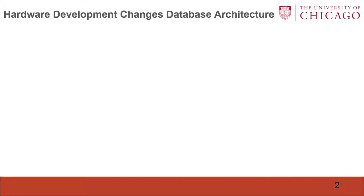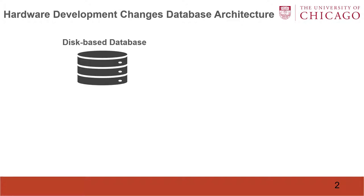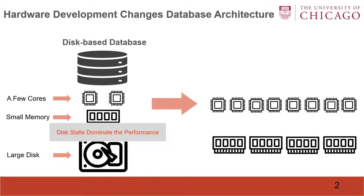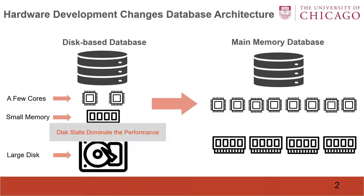Hardware development has changed the database architecture. A traditional disk-based database is designed for a machine with a few cores, small memory, and a large disk. In that architecture, disk stores dominate the performance. In recent years, we have seen that memory capacity has increased dramatically such that the whole database can be kept in memory. Therefore, the disk stores are no longer the performance bottleneck.